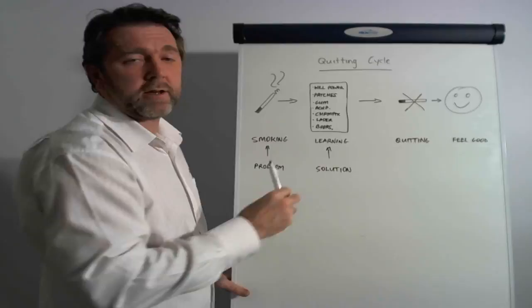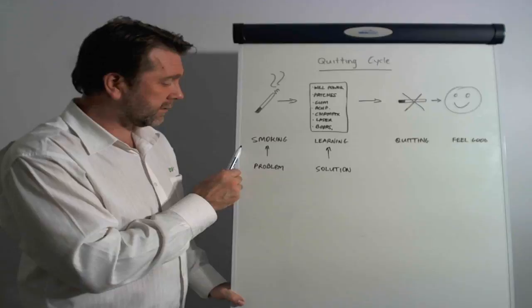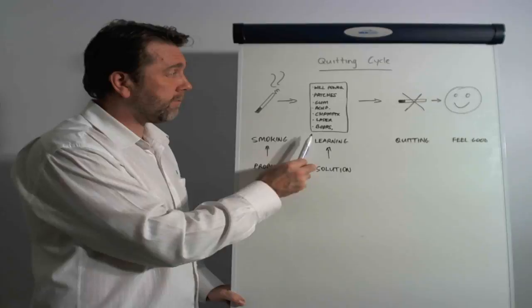This is the cycle that smokers will go through repeatedly when they try to quit. You've got smoking of course and that's seen as the problem, so you need to do some learning to solve this problem.